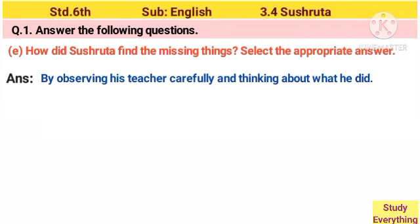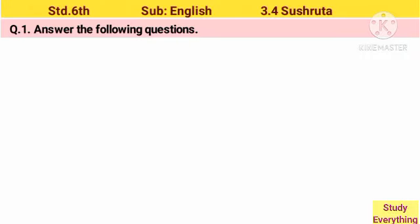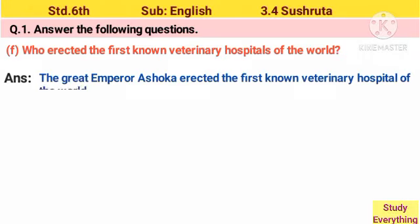E. How did Sushruta find the missing things? Answer: By observing his teacher carefully and thinking about what he did.